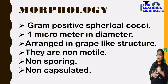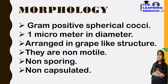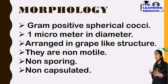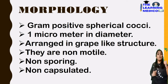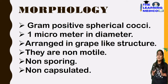Morphology: it is a gram positive bacteria with a diameter of one micrometer. It is arranged in a grape-like structure. It is non-motile, non-sporing, and non-capsulated.